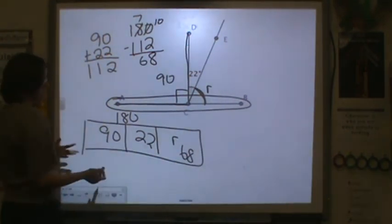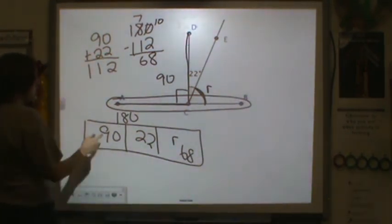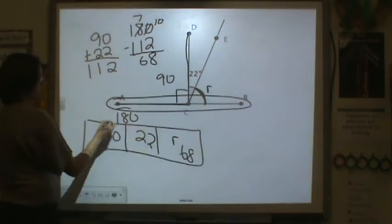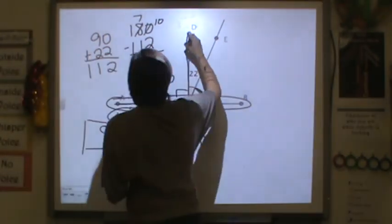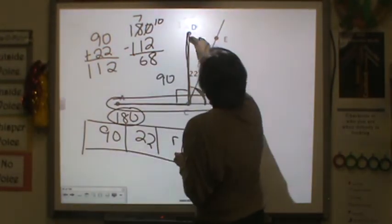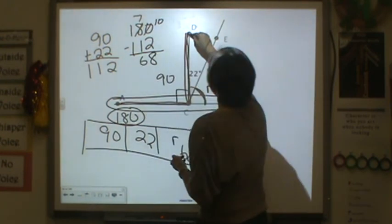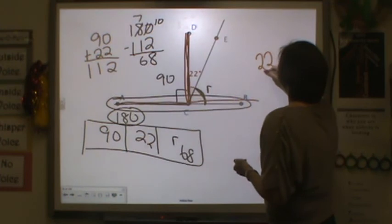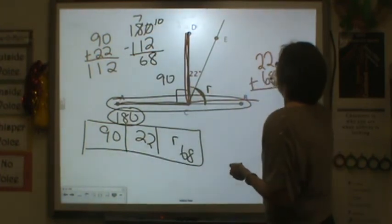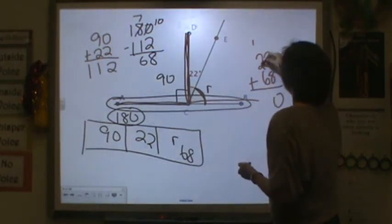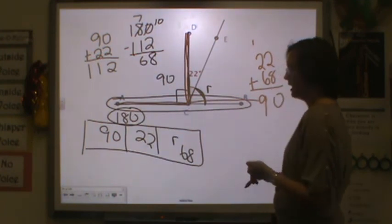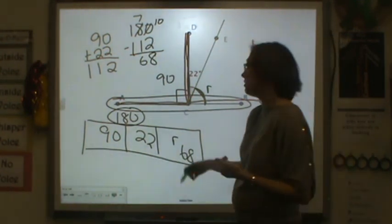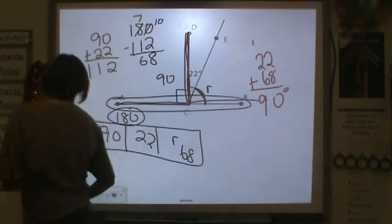Now, that also makes sense for two reasons. One, 90 and 22 and 68 equals 180. But if this is a right angle here, this has to be a right angle here, too. So is 22 plus 68 equal to 90? Well, let's see. 6, 2, and 1, that is a 9. So that it's equal to 90 degrees. So R has to be 68 for more than one reason.